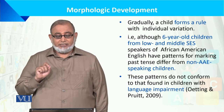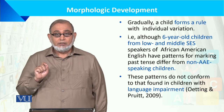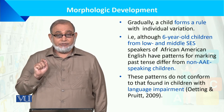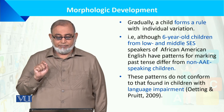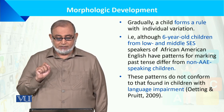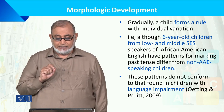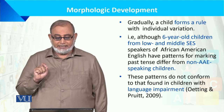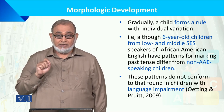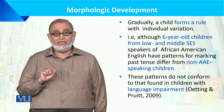Gradually, morphological development in a child involves rules with individual variation. These rules are created by individual variation. American English patterns for marking past tense differ from non-African American English speaking children — this is the difference between African American English and American English context in language development.